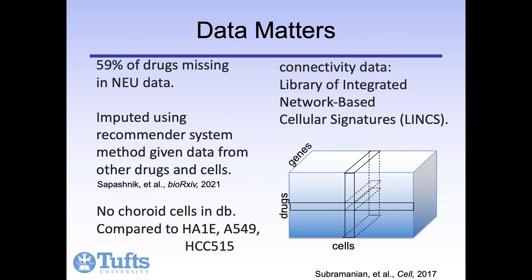In particular, in neurons, nearly 60% of the drugs were not assayed. So we imputed the missing connectivity data using a recommender system approach, where instead of predicting users' ratings of different movies, we predict drug connectivity in cells where the drug wasn't tested. This work is described in a bioarchive preprint with lead author Diana Sapochnik, but here we're just using the imputed data in neurons.